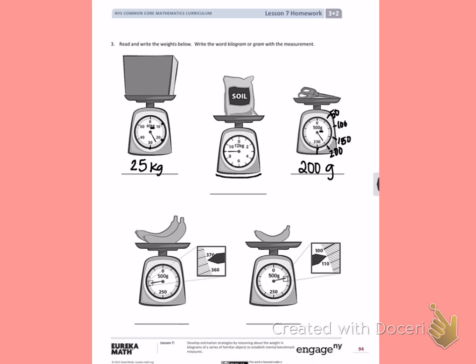Where I have two bananas, they again are being measured in grams. Now they've taken this little portion of the scale and brought it over here. I can see I'm counting from 360 to 370. That's counting by 1s.